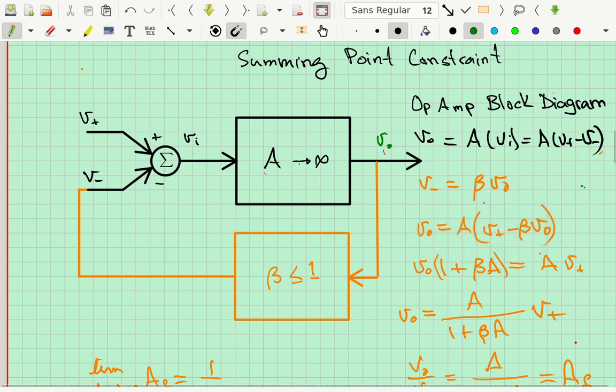So if you take and move the A times minus beta Vout over to the left, it becomes A plus beta times A times Vout. And then if you factor out the Vout you get Vout times 1 plus beta A. And what's left on the right is just A times V plus. Then you can divide both sides by 1 plus beta A and you end up with this equation that tells you what the output voltage is going to be right here. It's A over 1 plus beta A.